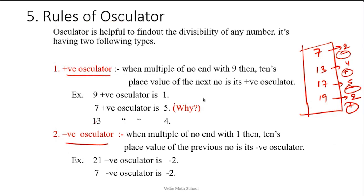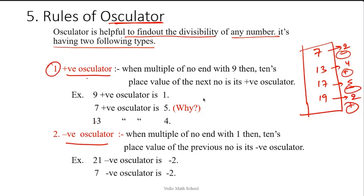First, understand what the osculator means and what its use is. Osculator is helpful to find the divisibility of any number. It has two following terms: the first one is positive osculator. So what does it mean by positive osculator? The multiple of a number ending with 9.